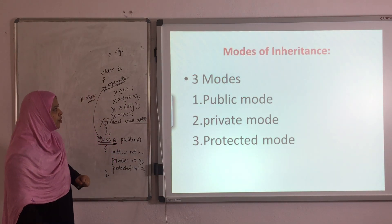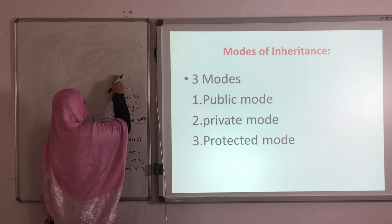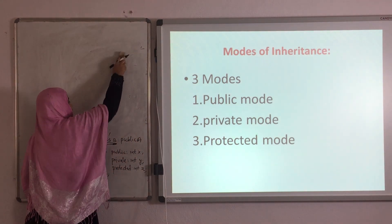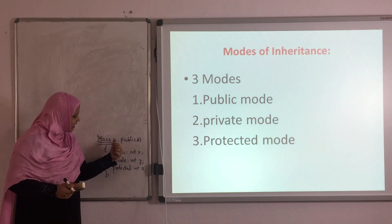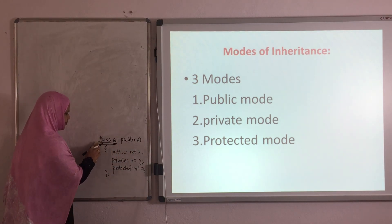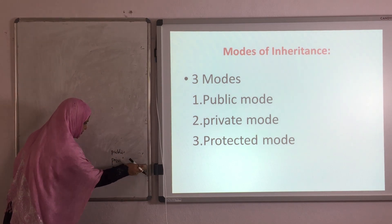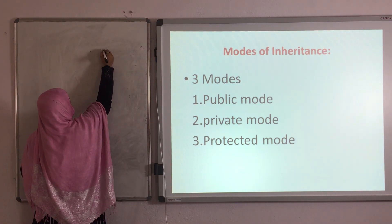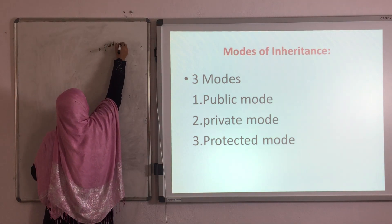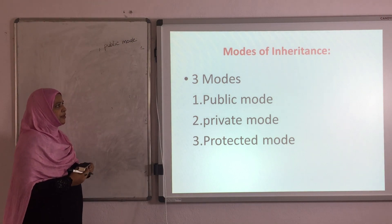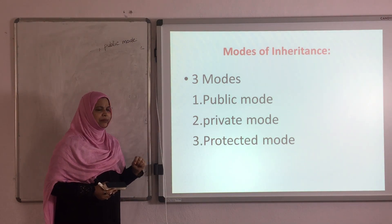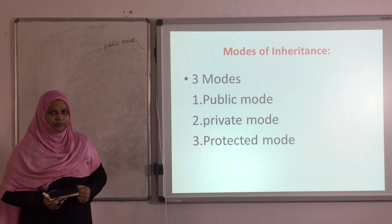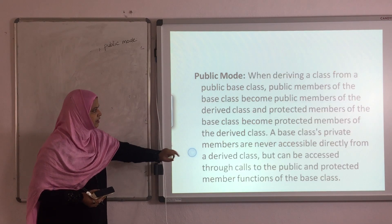Modes of inheritance. There are 3 modes: the first one is public mode, the second one is private mode, and the third one is protected mode. For example, class B inherits from class A — here I write class B public A for public mode inheritance.